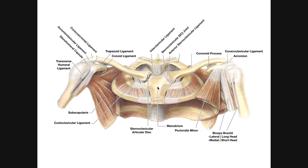Here's the manubrium of the sternum. We can see the two SC joints or sternoclavicular joints. Since this is an anterior view of the manubrium, this would be the left sternoclavicular joint, and over here would be the right sternoclavicular joint. We can also see the body of the sternum, and this line that's a little bit visible is the sternal angle, also called the angle of Louis, also called the manubriosternal joint.